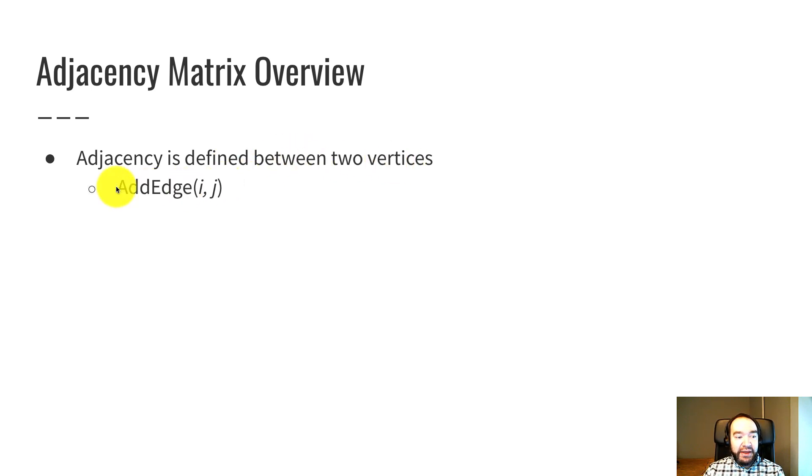For example, the add edge function has two arguments for two different vertices because we add an edge from one vertex to another vertex. Anytime we have one of these situations where we need to do a lookup with two different indexes, one way of having a lookup with two different indices is to have a 2D array or a 2D vector.